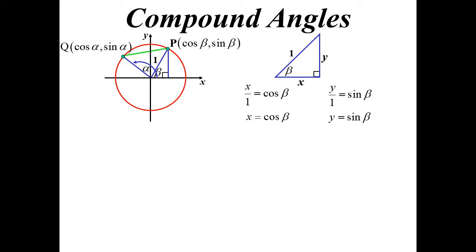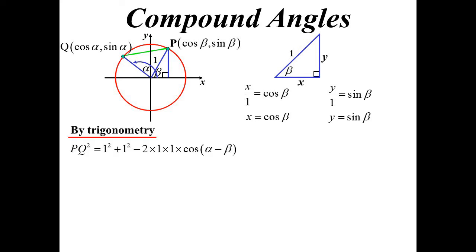Let's join those two points up — PQ. I'm interested in finding the length of that line. I can use the cosine rule. PQ² = 1² + 1² − 2(1)(1)cos(α − β). The angle in that triangle is the difference between alpha and beta, so alpha minus beta. Tidying that up: PQ² = 2 − 2cos(α − β).